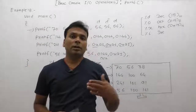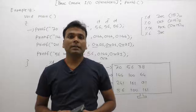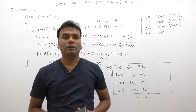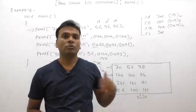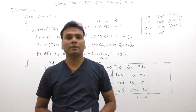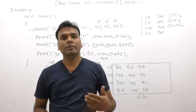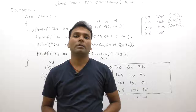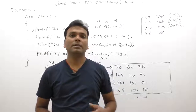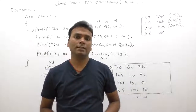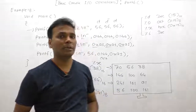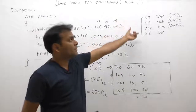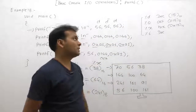If you want to display a number in a required number system, you should use the appropriate format specifier — %d, %o, or %x. Note that %x can be written in uppercase or lowercase. This concludes the example of printf with different types of format specifiers.